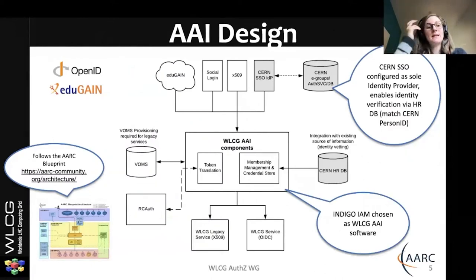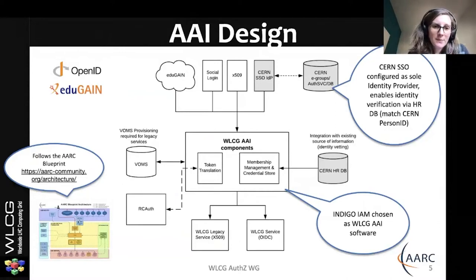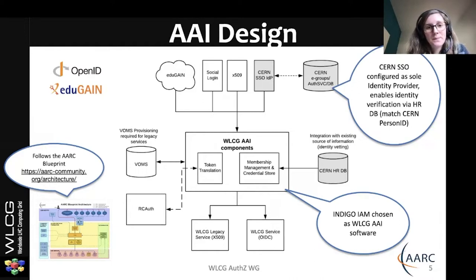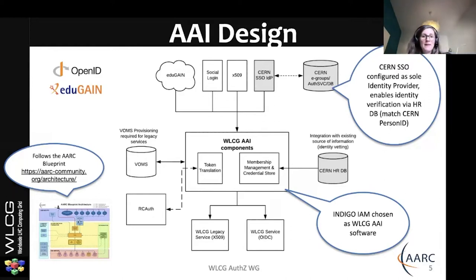The design follows the AARC blueprint architecture as closely as possible. The AARC blueprint came out of a project funded by the European Commission, and the benefit is that we can reuse best practices with guidelines available for questions we might have. The software we chose is Indigo IAM, which forms the main component — the WLCG AAI, authentication and authorization infrastructure. We have a few optional CERN-specific components as well, where it makes sense for particular experiments to be embedded firmly in the CERN environment.